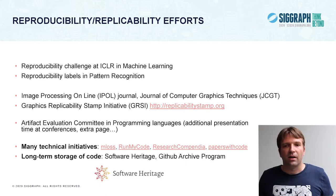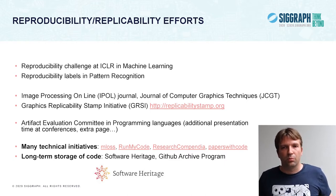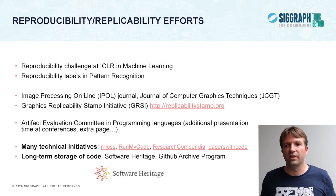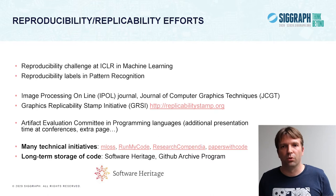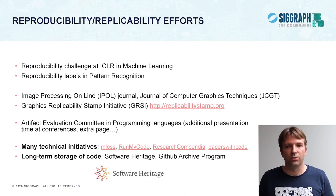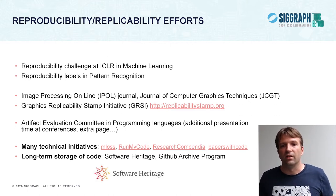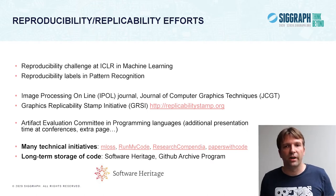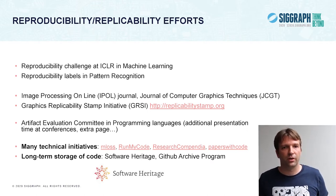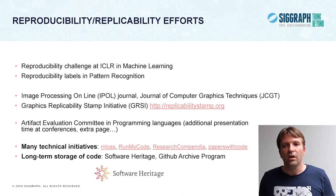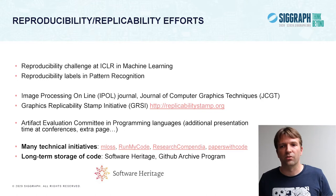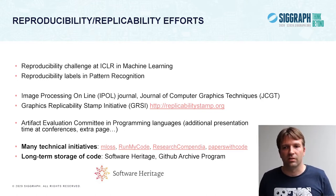In other domains, there are Artifacts Evaluation Committees, notably in programming languages. What's interesting is that they provide some incentive to be reproducible — they give additional presentation time for people that give code, or an extra page in the conference proceedings. There are also technical initiatives like websites that list codes, and there is a big issue that is the long-term storage of codes. The GitHub Archive program focuses on long-term archival of codes for the next 1,000 years. There's Software Heritage as well that is doing something similar.